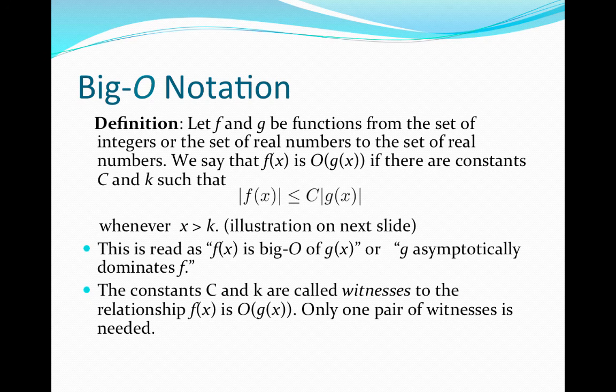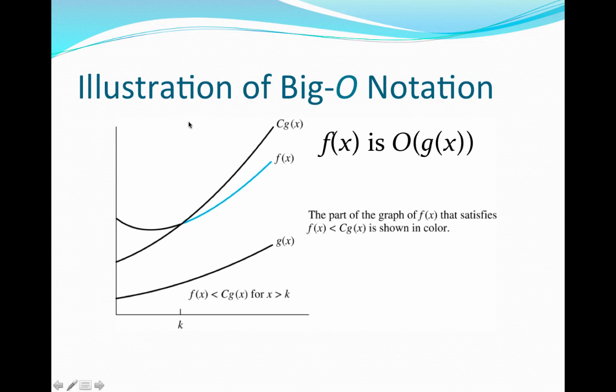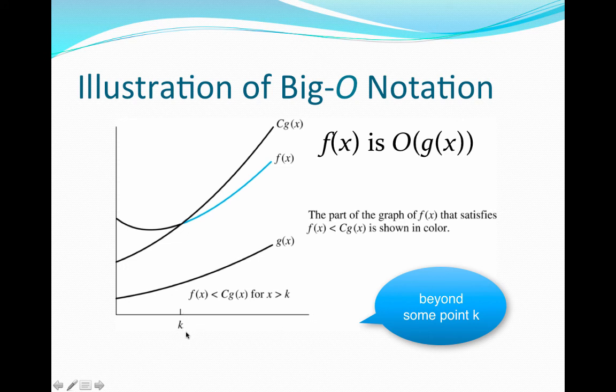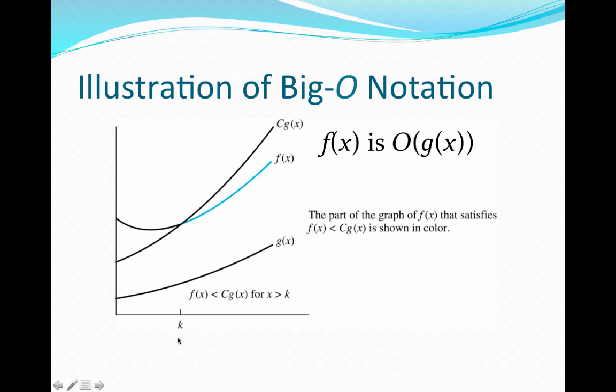So that's the statement and the definition of what it means for f of x to be big O of g of x. But in order to really understand it, probably it's more helpful to look at an illustration. So this picture illustrates when f of x is big O of g of x. So f of x is big O of g of x if we can find two constants c and k so that we can take the function g of x, multiply it by this value c, and in that case this function c times g of x grows faster than our function f of x. So that means that the values of c times g of x are bigger than or equal to the values of f of x for some point beyond this value k.